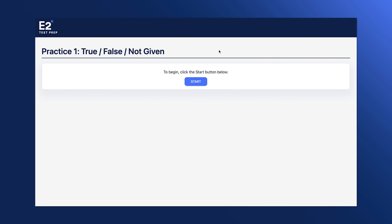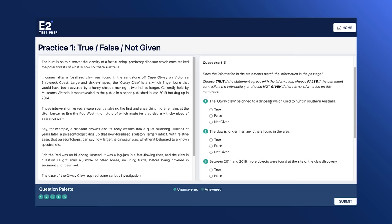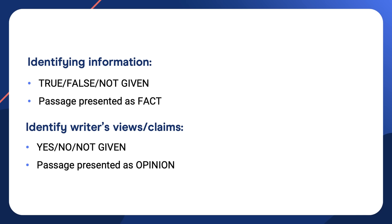If you need more practice, we have lots of IELTS practice questions on each reading task at E2 — sign up for free at e2testprep.com. Before we continue, I want to mention that in the IELTS reading test there is another task called identifying writers' views or claims, where you choose yes, no, or not given instead of true, false, or not given. This is because true/false questions treat the passage as fact, whereas yes/no/not given questions treat the passage as the writer's opinion. You should still use the same techniques for both task types.